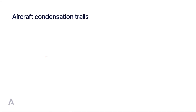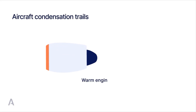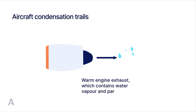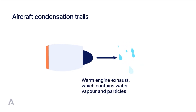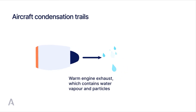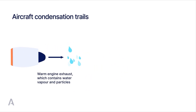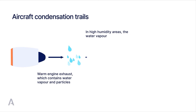Aircraft condensation trails form when the relatively warm engine exhaust, which contains water vapour and particles, is released into the cold ambient atmosphere, causing the vapour to condense into water droplets on the particles. The condensed water droplets freeze if the temperature is cold enough.